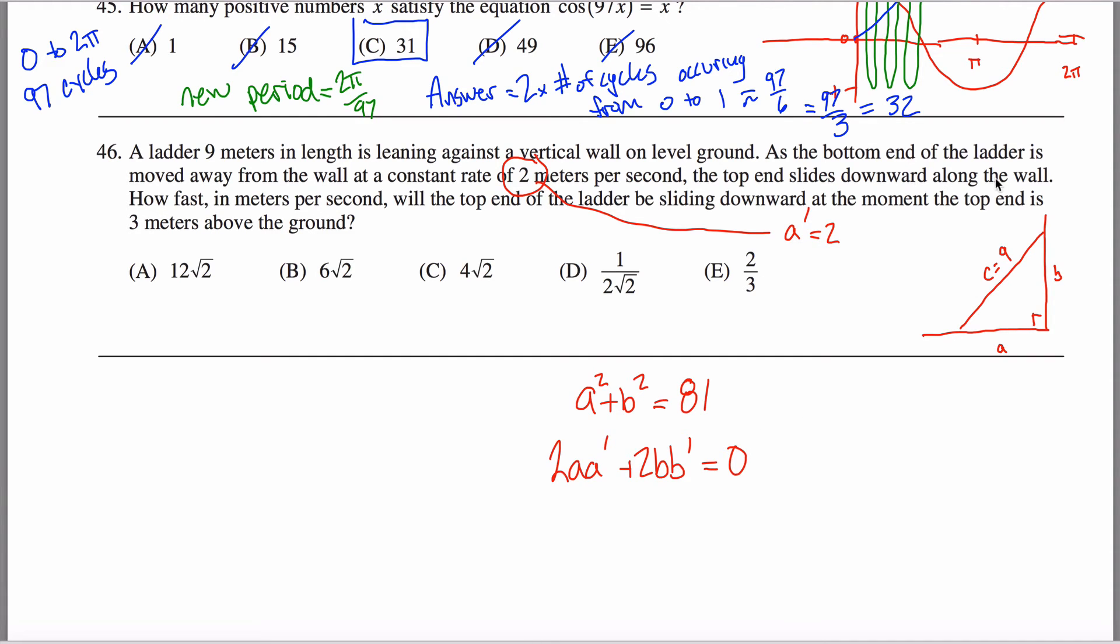The top end slides downward along the wall. How fast will the top end of the ladder be sliding downward? That's asking me about B prime. It's not exactly B prime because B prime will be a negative number because this is getting smaller and smaller and my answer will be positive. But B prime is the negative of this answer. How fast in meters per second will the top end of the ladder be sliding downward? At the moment, the top end is three meters above the ground. So what this tells you is that B equals three.